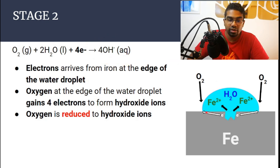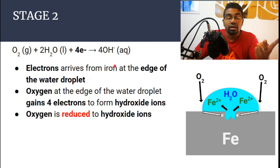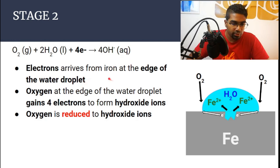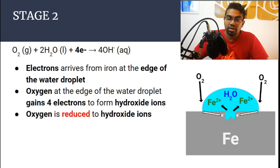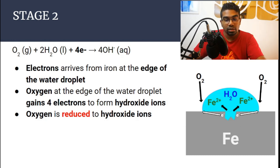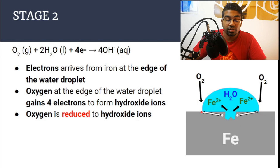The electrons arrive at the edge and oxygen gains four electrons to form hydroxide ions. To gain four electrons, two moles of iron atoms have to dissociate so that four electrons are released in total. Here oxygen is reduced to hydroxide ions — iron is oxidized by donating the electrons away, and oxygen is reduced by accepting the electrons in the presence of water.